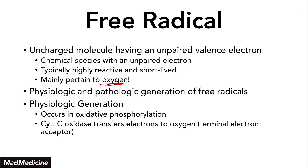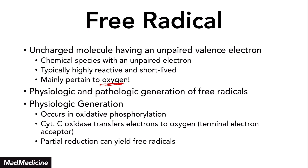Along the way, as oxygen is accepting the proper amount of electrons, you are going to get partial reduction until it gets to a certain point where it is completely reduced. At all points, it is going to generate free radicals, especially if that whole process of oxidative phosphorylation is interrupted. That will lead to partial reduction and therefore you will get free radicals in that process.